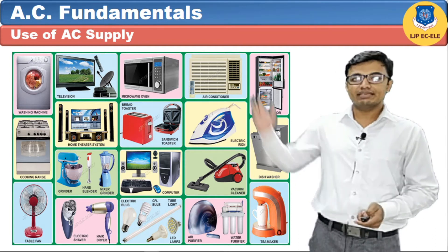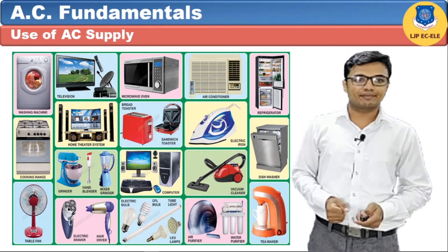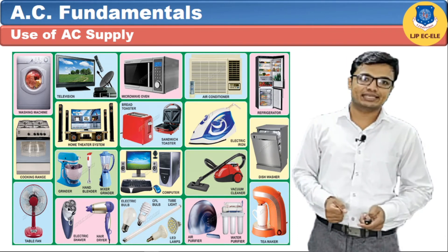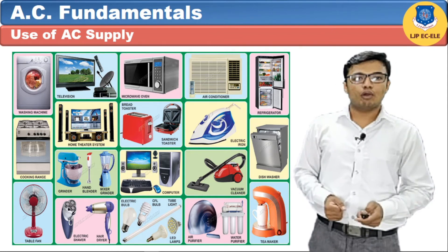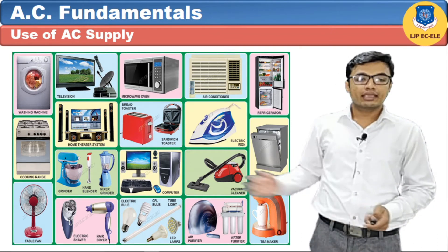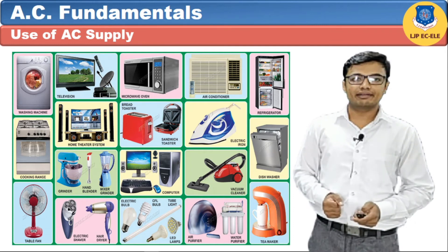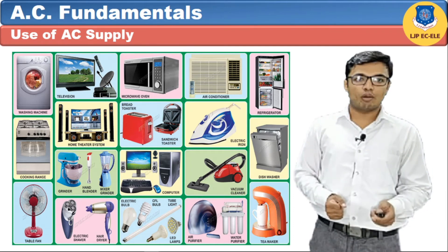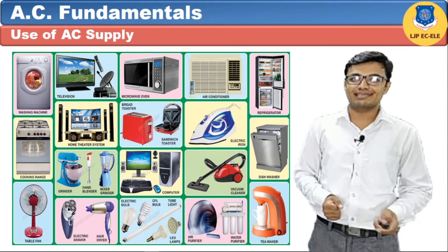Here you can see one more device — the microwave oven — which operates on frequency. As you know, DC supply does not have any frequency; only AC supply has frequency. So we have to connect the microwave oven with the AC supply. Here one CFL lamp operates on ionized inert gas, and ionized inert gas is only possible with AC supply, so we also connect the CFL lamp with AC supply.